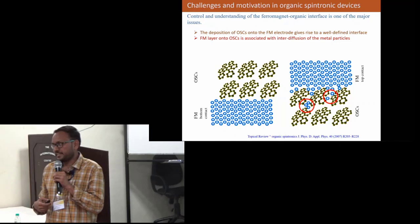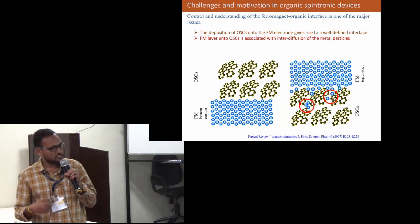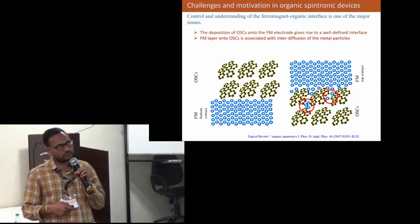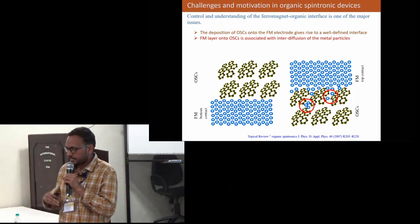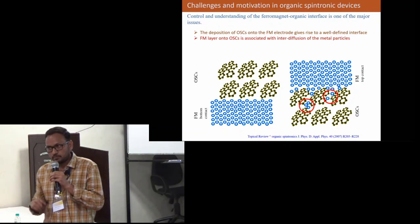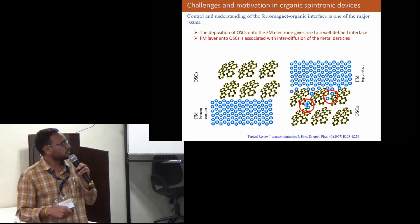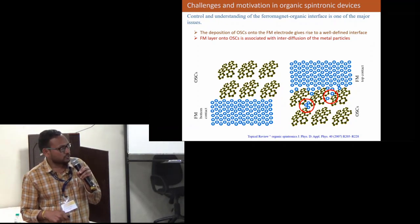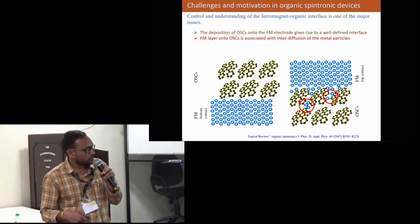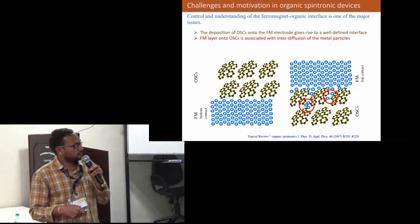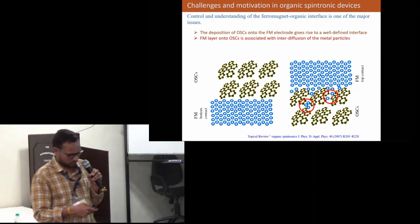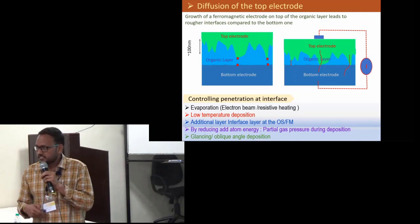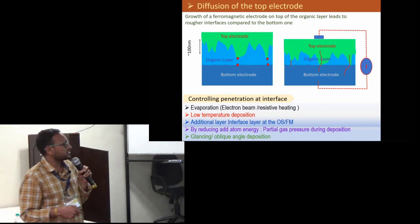Though there are many applications, the spintronic devices like spin valves have some preparation challenges. When we deposit an organic material on a metallic substance we get a sharp interface, but the reverse case is complicated. When we deposit any metal on a polymer, it diffuses deep into the polymer. We get failure in organic spin valve structures. Taking these as motivations, people are trying to avoid the deposition of metals into polymer semiconductors.